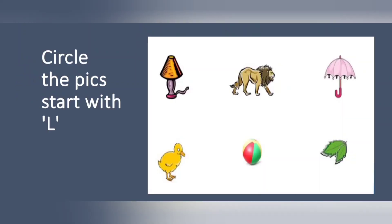The next one is circle the pictures that start with L. So, these are few pictures. The first one, what is that? L for? Just now we discussed. Lamp. Right? So, we have to circle. L for lamp. The next one, L for lion. So, circle.